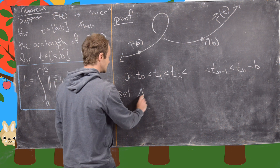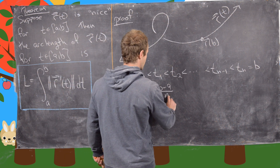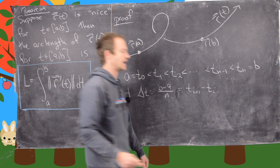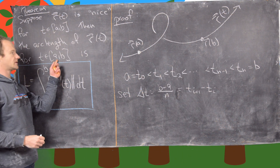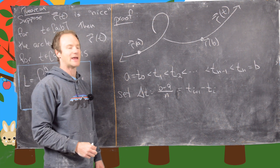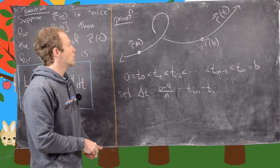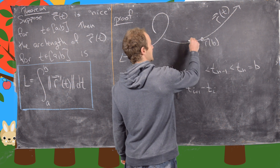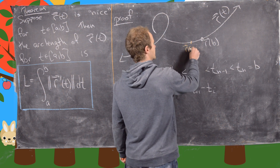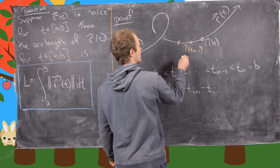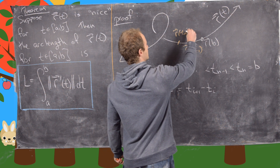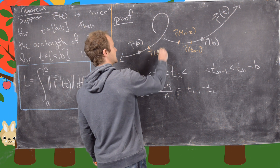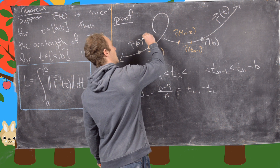We'll set delta t equal to b minus a over n, and notice that's also equal to t_{i+1} minus t_i. So we've taken the interval from a to b and partitioned it into n equal parts. We can put little hatch marks on here. So right here is the point r of t_n, then r of t_{n-1}, then r of t_{n-2}, and so on. And right here would be the point r of t1, and right here the point r of t2, and so on.